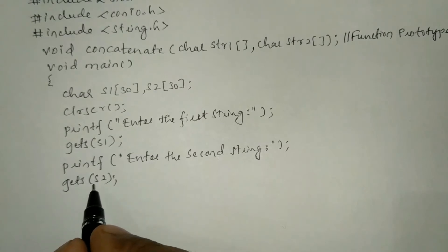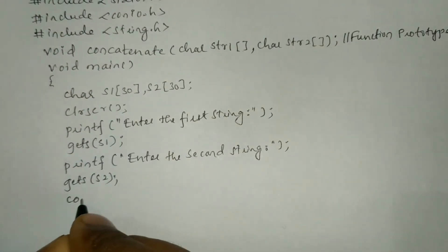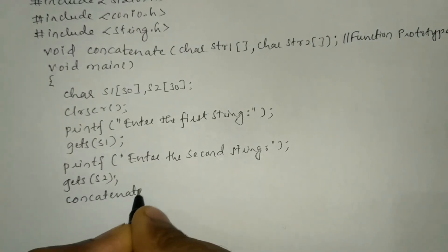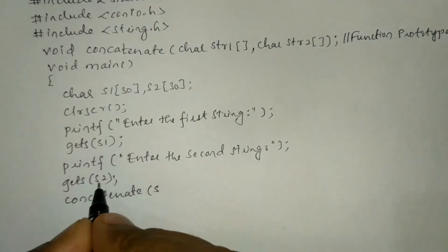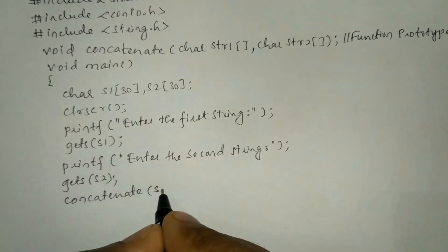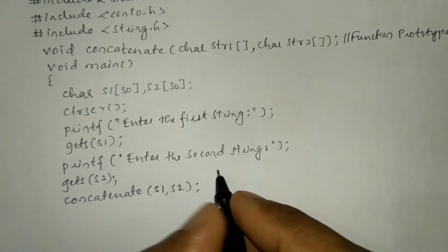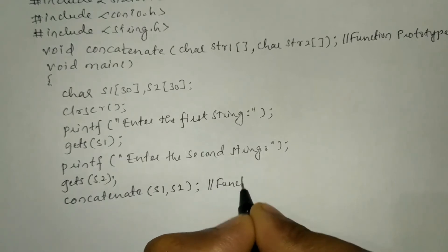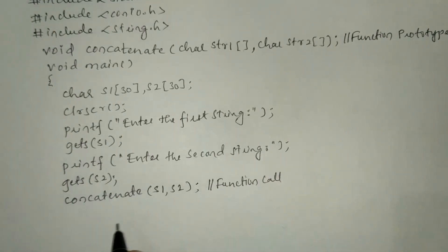After receiving the inputs, we are going to call this particular function. We write concatenate and pass both arguments s1 and s2, then put a semicolon. This particular statement is called the function call.